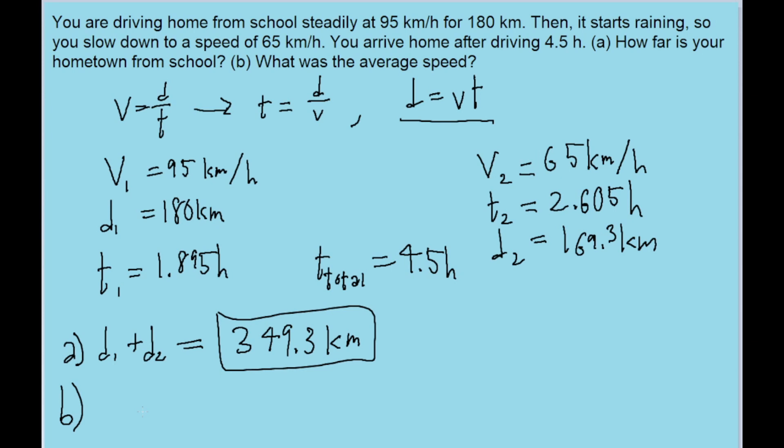Now part b asks for the average speed throughout the whole motion. Now don't be deceived here - a very common mistake that people make is they think they can just take the two speeds and just take the average of those two speeds, like take 95 plus 65 and then divide that by two. That doesn't work here because the car spends more time going 65 than it spends going 95, so the average should actually be closer to 65 than 95 rather than being right in between.